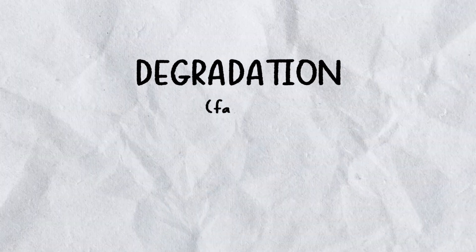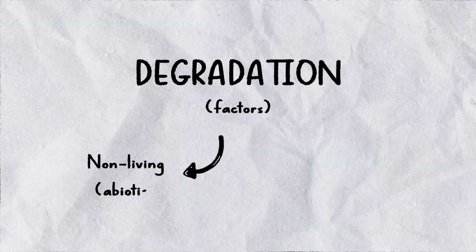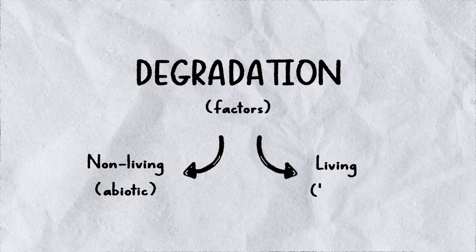Several factors can contribute to the degradation of a chemical substance in our ecosystem. Scientists divide these factors into two groups, whether they are living or not.